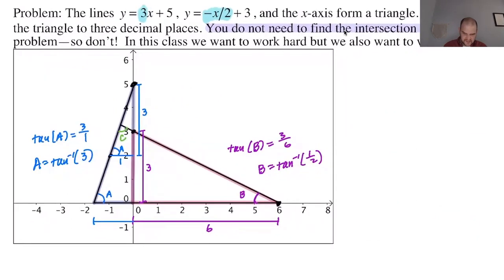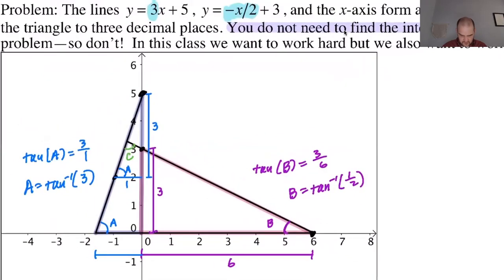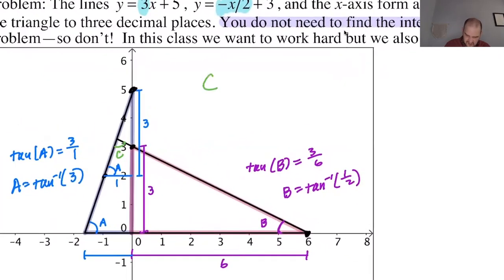So then angle C, which is definitely definitively the worst one to find, I'm just going to say C is 180 minus A minus B. And therefore, C is 180 minus tan inverse of 3 minus tan inverse of 1 half. So really, all of this hinges upon us being right. Let's see. We need these three to add up to 180. So let's go to the calculator and see how we did.